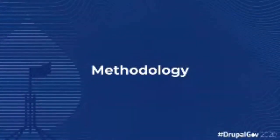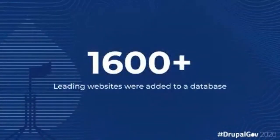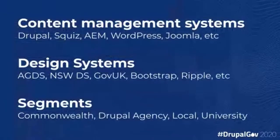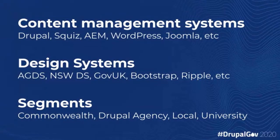Before we get into it, let's have a look at the methodology that was used in this research. We went out and we collected 1,600 websites. These websites were based in Australia and overseas, but basically they were designed to represent in good numbers the various categories that we were interested in. We have content management systems, design systems, and various segments that we're looking at. Each site has been placed into one or more of these for analysis purposes.